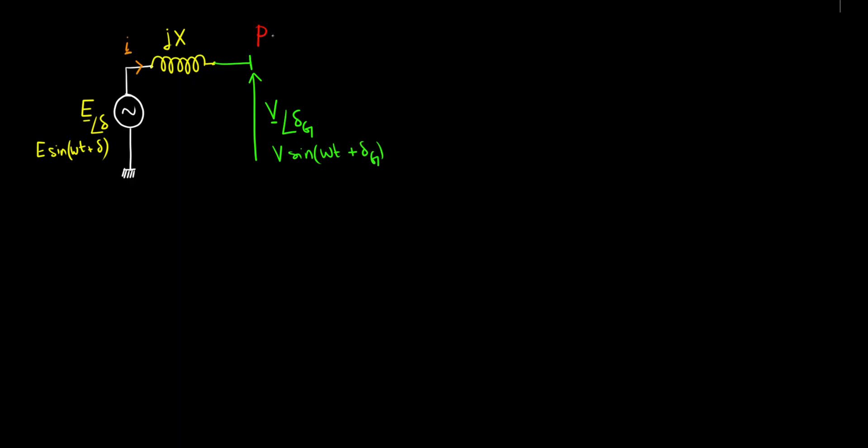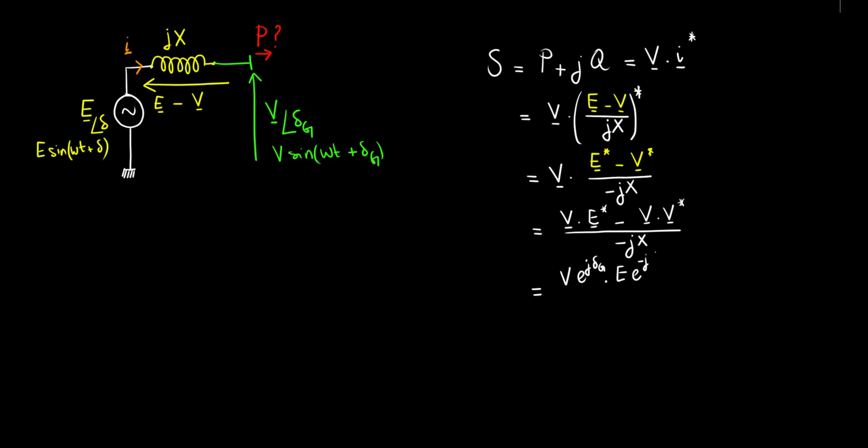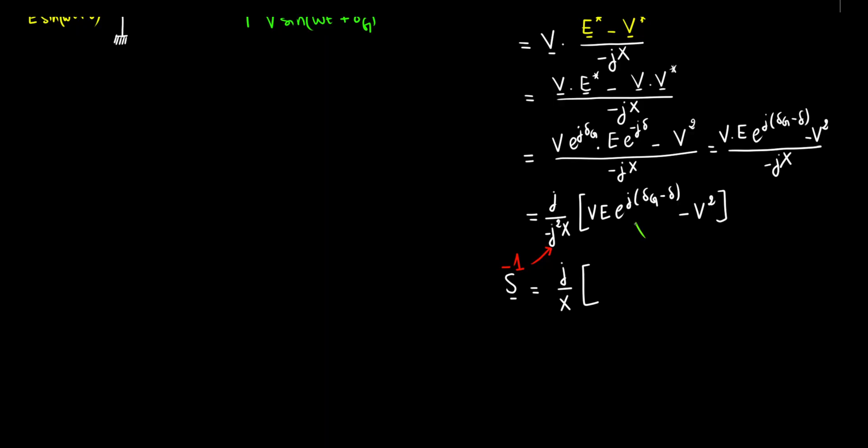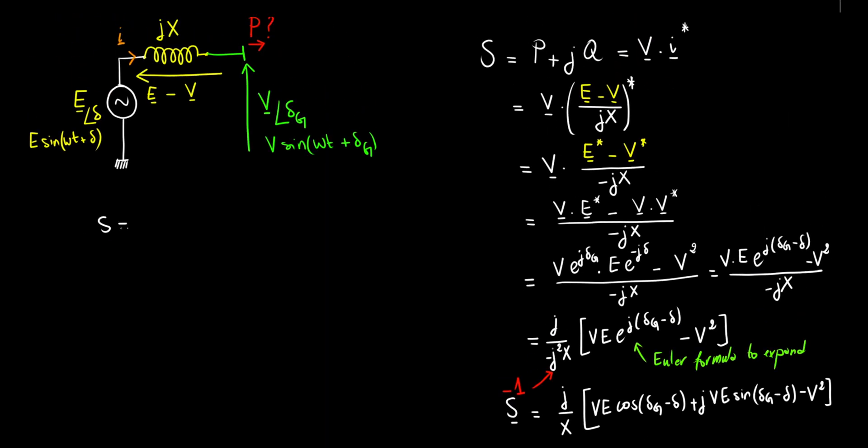Let's now calculate active power without explicitly using impedances. We start with complex apparent power, expressed as P plus jQ. P is active power, Q is reactive power, which is also voltage multiplied by the conjugate of current. Using Ohm's law, current in the inductance is (E minus V) over jX. Distributing the conjugate and using Ohm's formula, we isolate real and imaginary parts, eventually arriving at a beautifully simple formula for active power.